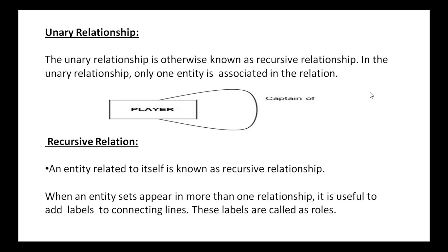For example, take a player entity. In that player entity, we have many player entity instances. A captain is also a player — he is also one of the entity instances. So many players have only one captain, and one captain leads many players. That's why there is a one-to-many relationship between captain and player. Since captain is also a player, that entity instance also exists in the player entity. That's why one player entity instance is related to many other player entity instances within the player entity itself — the entity related to itself is known as a recursive relationship.